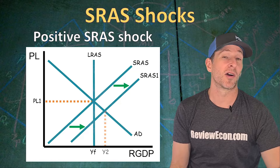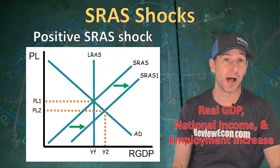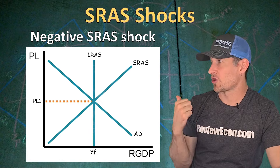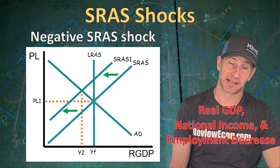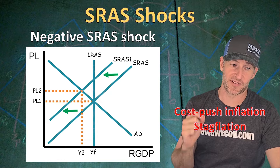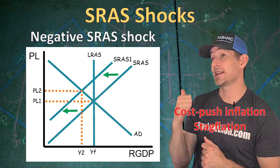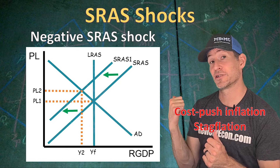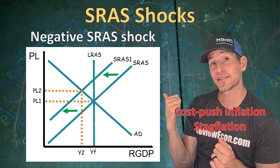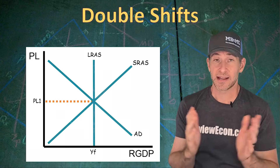A positive short run aggregate supply shock shifts that supply curve to the right, causing real output — real GDP, national income, and employment — to increase, but with a rightward shift we actually see a lower price level. If we have a leftward shift of the short run aggregate supply curve, that results in lower real GDP, national income, and employment, but the price level increases, meaning higher inflation. This type of inflation is called cost-push inflation, also known as stagflation. It is often caused by a dramatic increase in the price of resources like oil or gasoline. It's called stagflation because we have a stagnant economy — unemployment greater than the natural rate — combined with higher prices. Both cost-push inflation and stagflation are caused by leftward shifts of the short run aggregate supply curve.